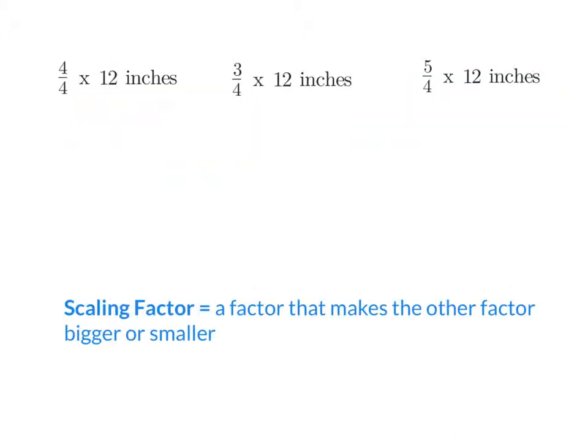Here we can see three multiplication problems. In the first one, 4 fourths times 12 inches — one factor is 4 fourths and the second factor is 12 inches. In the second, 3 fourths times 12 inches. And in the last one, 5 fourths times 12 inches. Each of these multiplication problems has two factors, but one factor is what we're going to call the scaling factor.